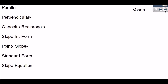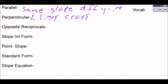So a quick vocab. Parallel lines means same slope different y intercept. Perpendicular means two different lines that cross and make four right angles. Opposite reciprocal means flip the fraction and flip the sign.